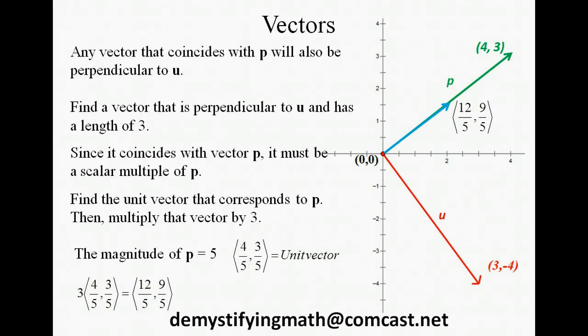And we get the vector 12 fifths, negative 9 fifths. You can see that it coincides with vector p and is perpendicular to vector u. You can verify the length of the new vector using the distance formula, and verify that the new vector and vector u are perpendicular by looking at their dot product. Thank you for tuning in.